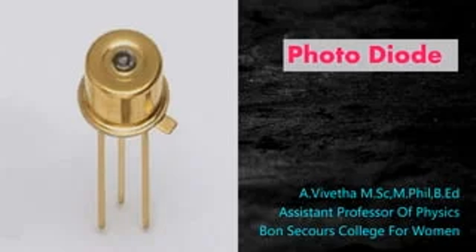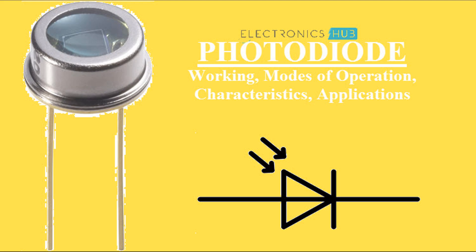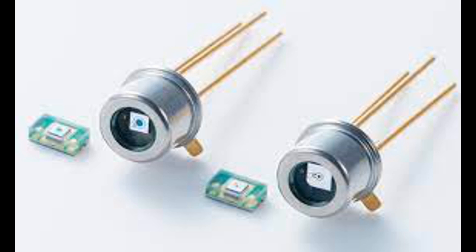Photodiodes offer several advantages that make them suitable for a wide range of applications. High sensitivity — low light detection: Photodiodes can detect very low levels of light, making them suitable for applications requiring high sensitivity, such as medical imaging and scientific instrumentation. Fast response time: Photodiodes can convert light to electrical signals very quickly, which is essential for high-speed communication systems and fast switching applications.